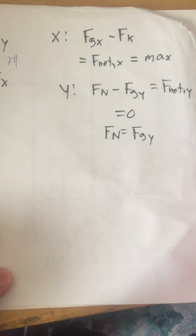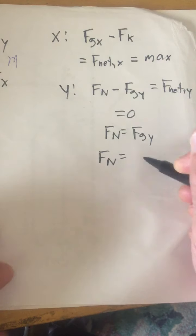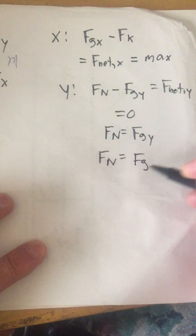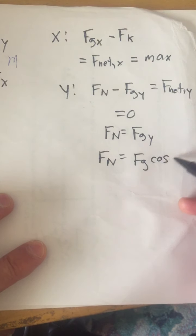And in the previous video we determined that Fgy is equal to Fg times the cosine of theta, which is equal to mg cosine theta. So that's for the y direction.